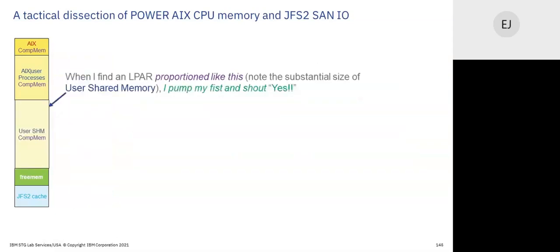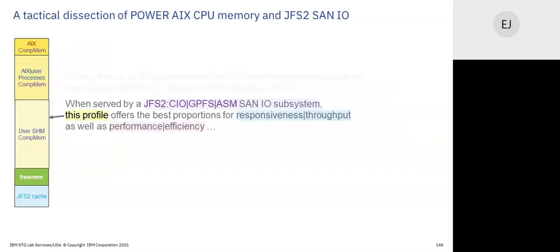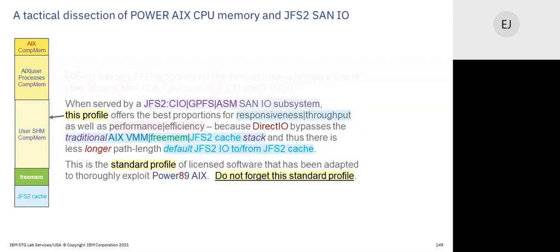To sum up: if you've got an LPAR with big shared memory and you're using direct I/O methods, you have the best proportions for responsive throughput performance efficiency — because you have removed much of the overhead of the AIX JFS2 UIO stack. This is the scanner profile of software that is adapted to exploit our technology. There's a whole lot of software out there that has not adapted to exploit our technology.